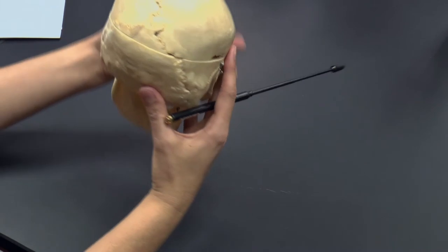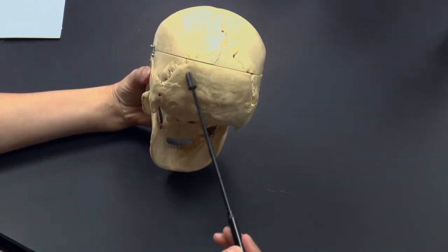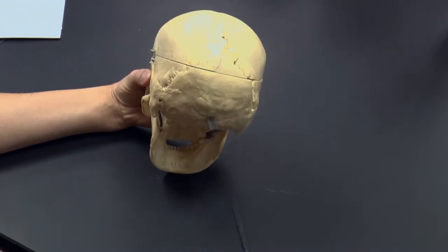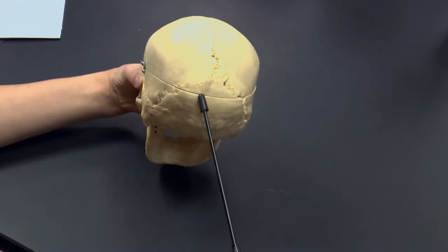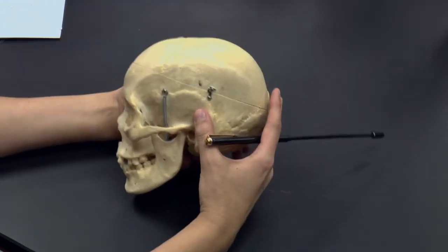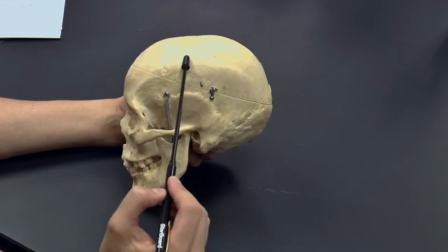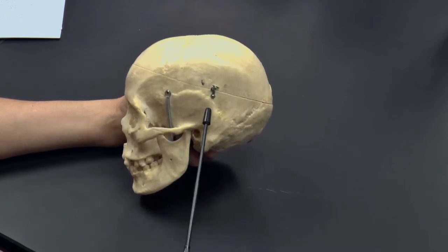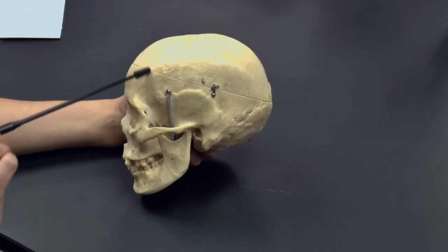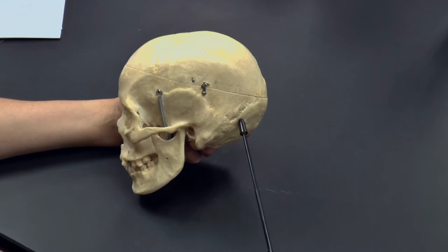Turning to a posterior view of the skull, you can see the occipital bone — the back of the cranial cavity. Continuing to rotate around to the other side, here again you have the parietal bone, the temporal bone, the frontal bone forming the forehead, and some of the occipital bone.